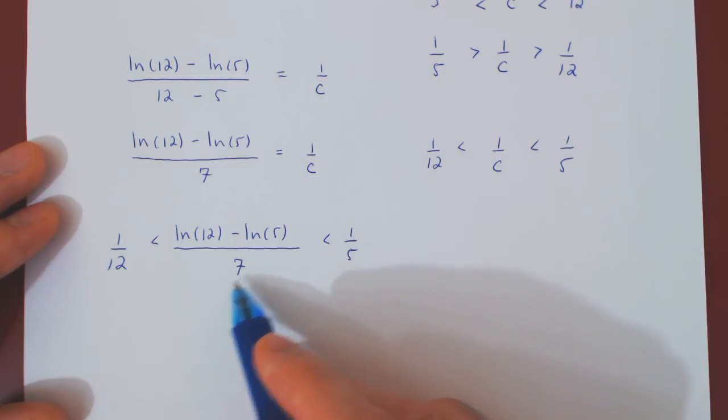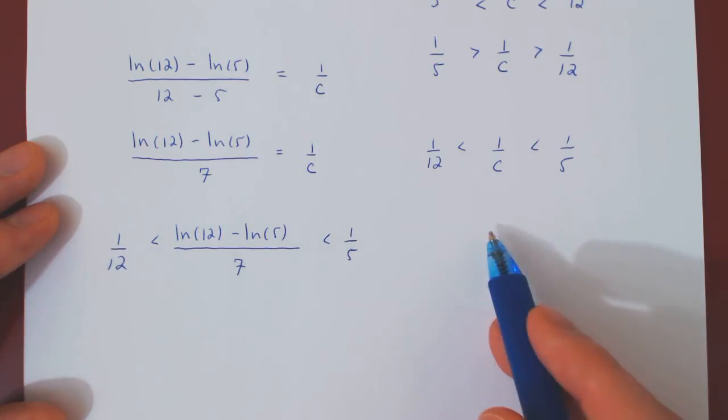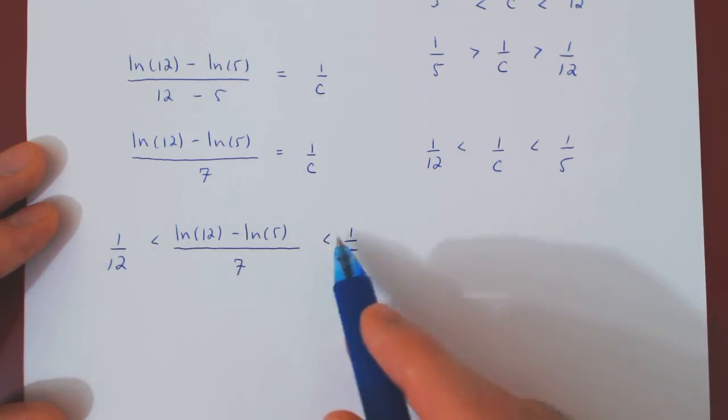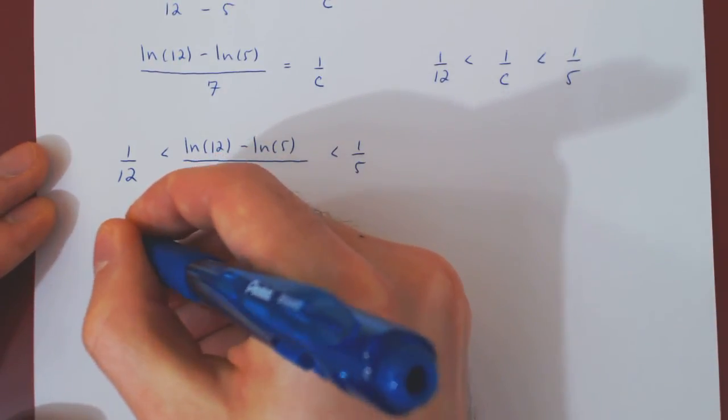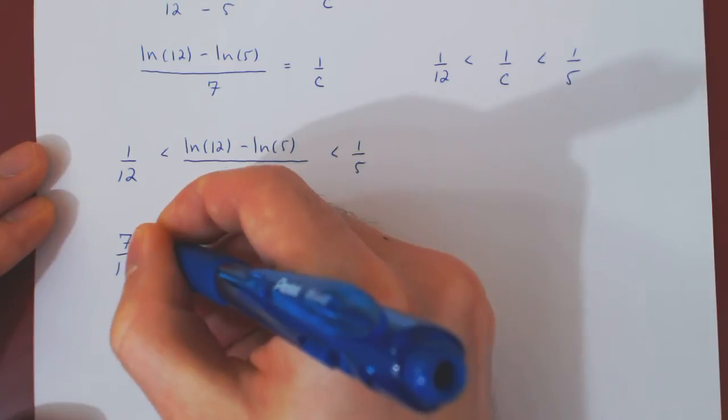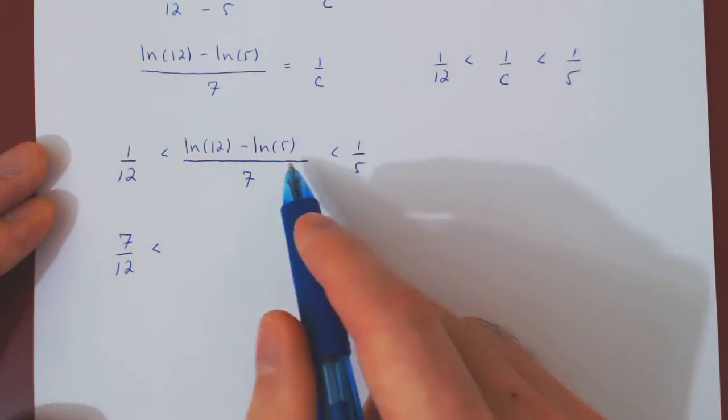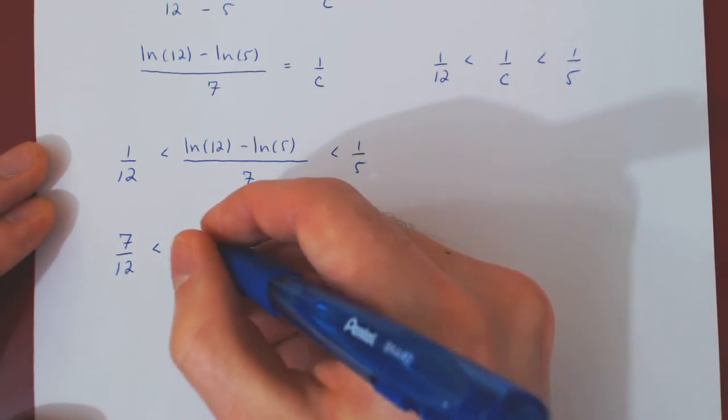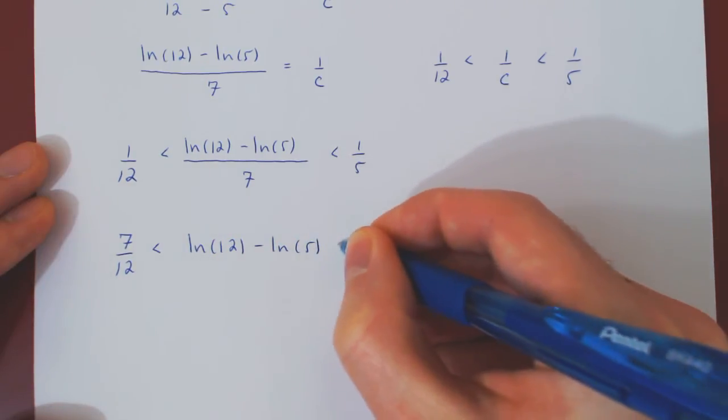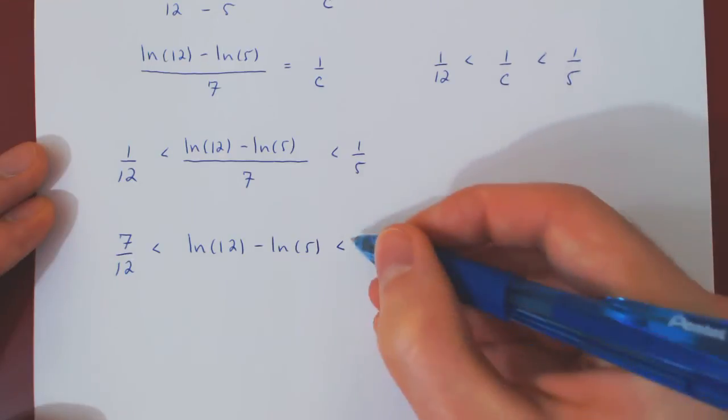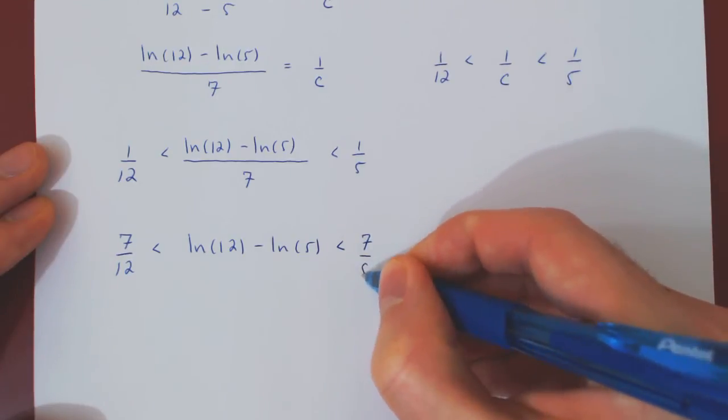As 7 is a positive integer, I can multiply across both inequalities, and this will preserve the direction of the inequalities. So I will have on the left, 7 over 12 is less than, if I multiply this by 7, the over 7 goes away. So we're left with ln of 12 minus ln of 5. It will be less than 7 times 1 over 5, 7 over 5.